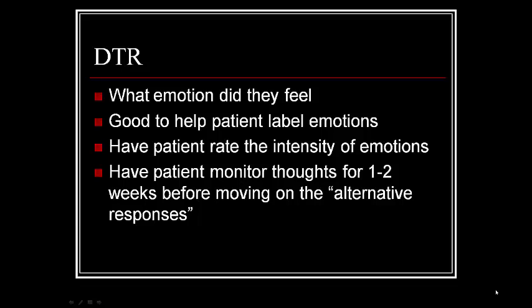The first thing you want to do with your client is have them think about these situations and what emotions they feel. You want to make sure they can label their emotions — there's a condition called alexithymia, where people are not very good at labeling their emotions. They have emotions but cannot label them appropriately. It's important to make sure your patients understand and can label their emotions appropriately. Have patients rate the intensity of emotions, and have them monitor their thoughts for one to two weeks before moving on to the fourth column of the DTR where you talk about alternative responses — which is what we're going to talk about next time.